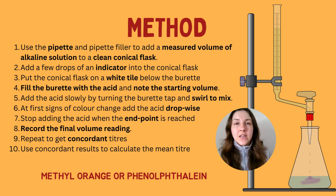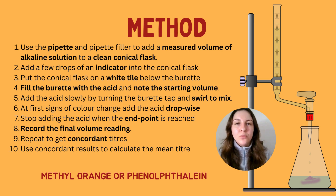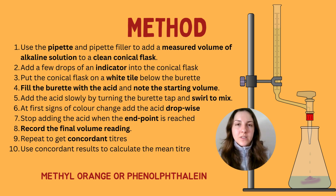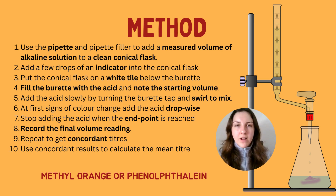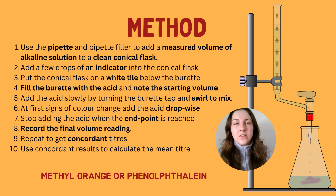Next, add a few drops of an indicator to the conical flask. The indicators used for titrations are methyl orange or phenolphthalein. Phenolphthalein is pink in an alkali solution and decolourises in a neutral or acidic solution. Methyl orange turns red or reddish-orange in an acidic solution, and yellow in a neutral or alkaline solution. You can use either of these indicators.